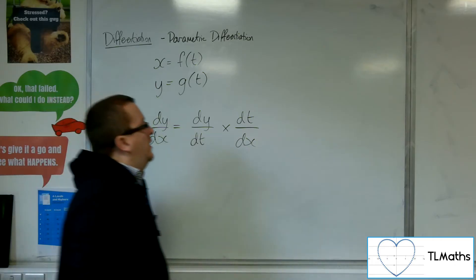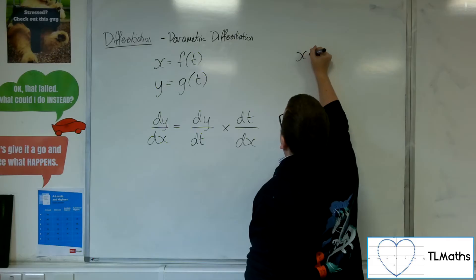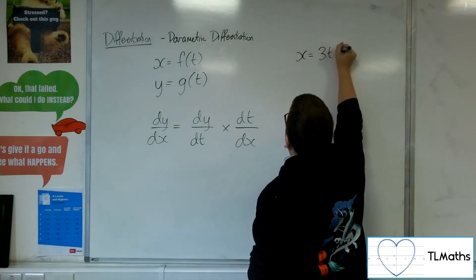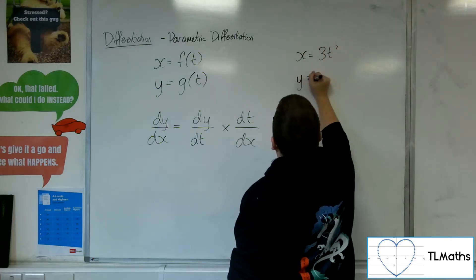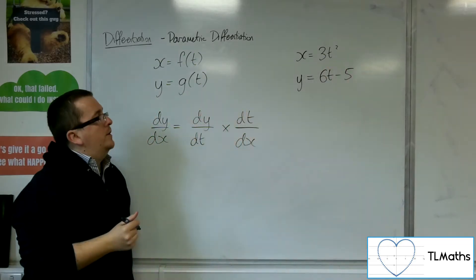So, for example, as a brief example of this, let's say x is equal to 3t squared and y is equal to 6t minus 5. OK.